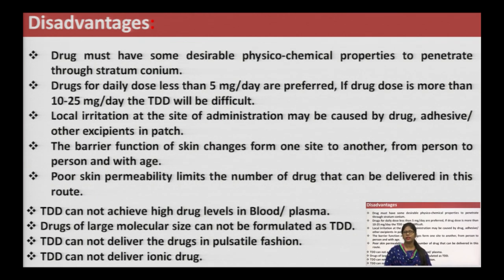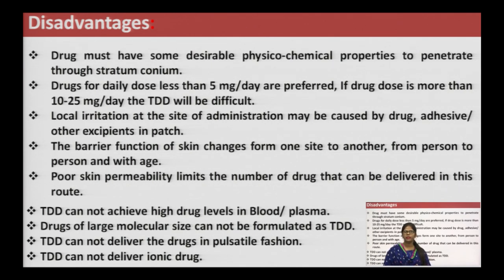Now for the disadvantages of Transdermal Drug Delivery System. The biggest factor is the physicochemical properties of the drug — molecular size and polarity limit drug administration through the stratum corneum, which is the most major barrier. It is a cornified layer of keratinized cells that works as a water-impermeable membrane. We cannot give large amounts of dose via transdermal delivery — less than 5 mg per day is preferred, and more than 10 to 25 mg per day becomes difficult to deliver.